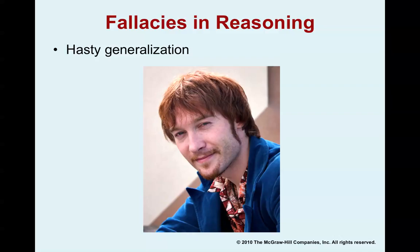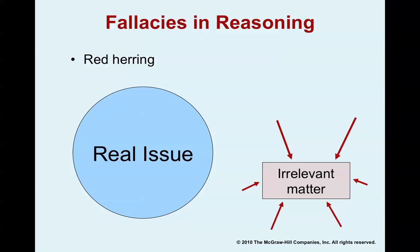A hasty generalization is a conclusion reached on the basis of insufficient evidence. For example, a person says: I knew a redheaded kid in third grade who was always getting into fights, and I know two redheads who are easily angered, so I guess redheads are quick-tempered people. That generalization is based on inadequate evidence — it's too broad and sweeping to be fair.